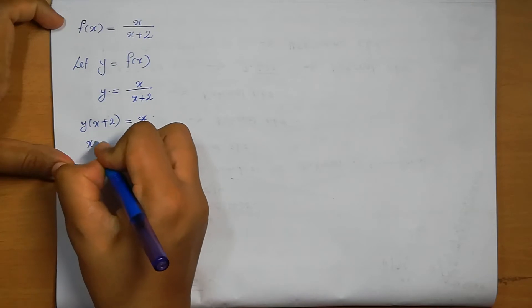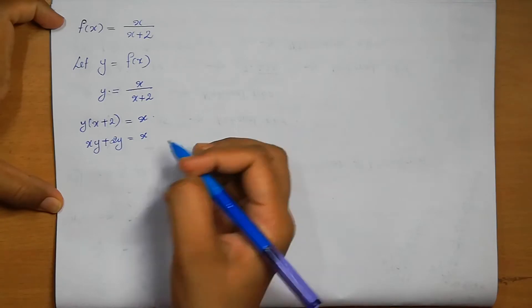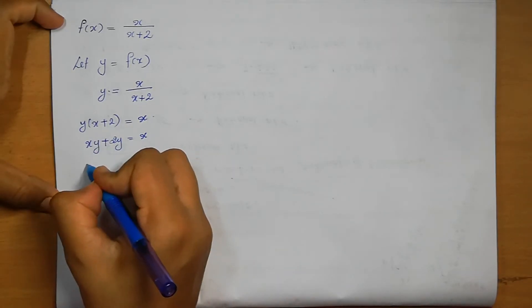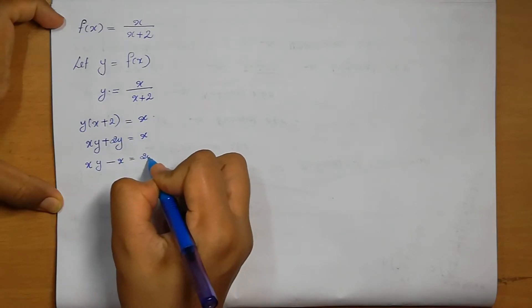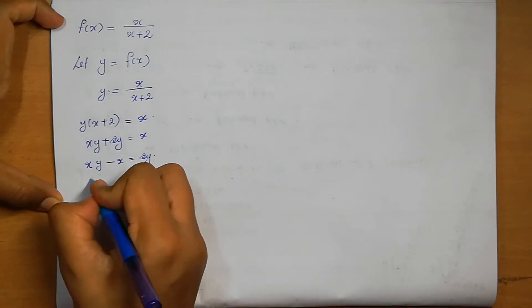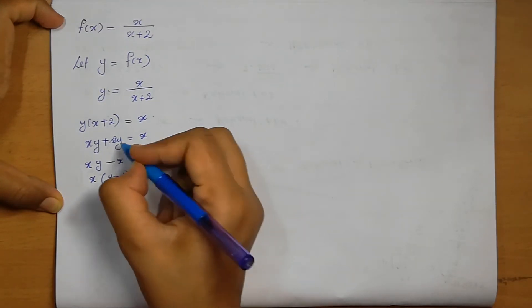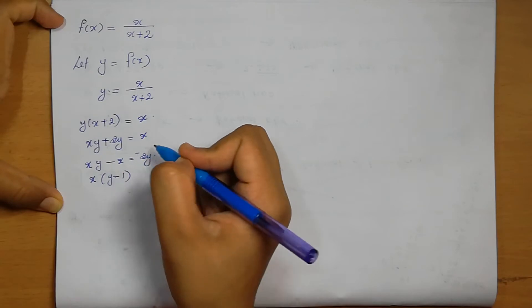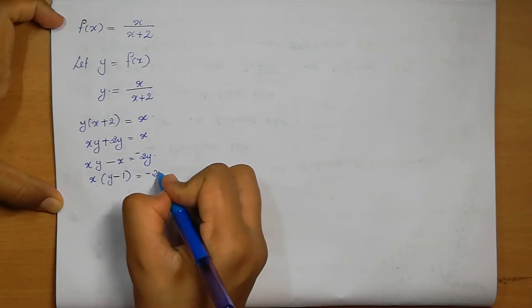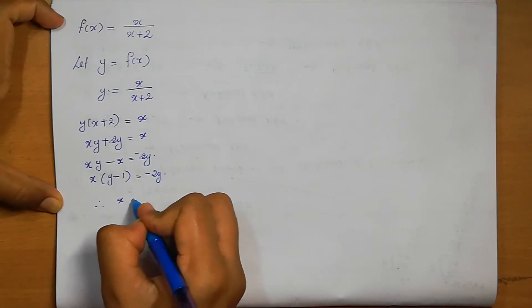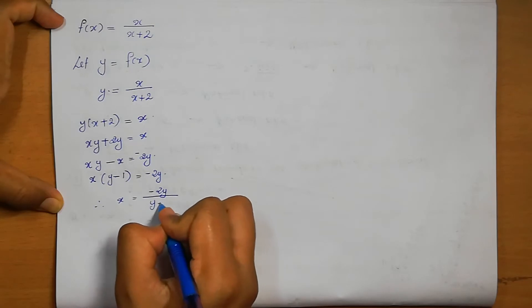So xy + 2y = x. Bringing x terms together: xy - x = -2y. Taking x as common: x(y-1) = -2y. Therefore x = -2y/(y-1).